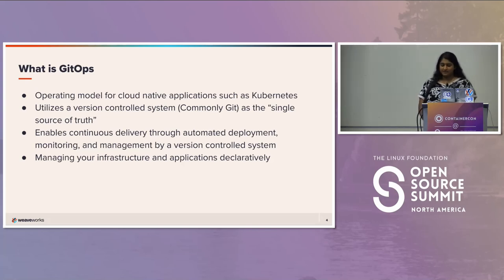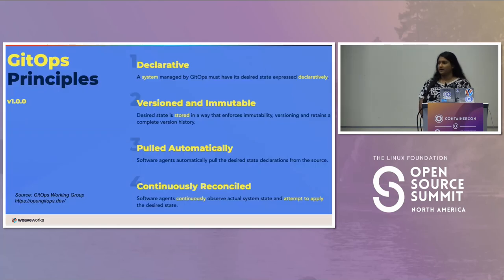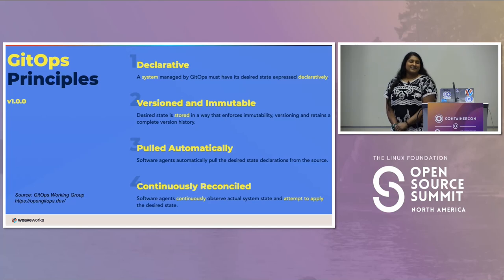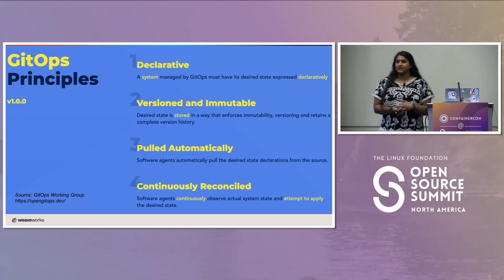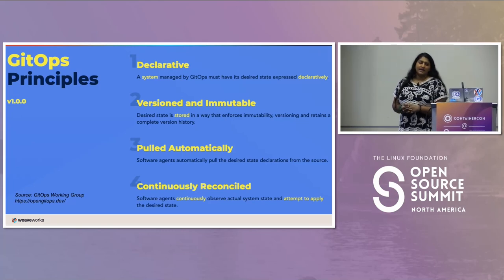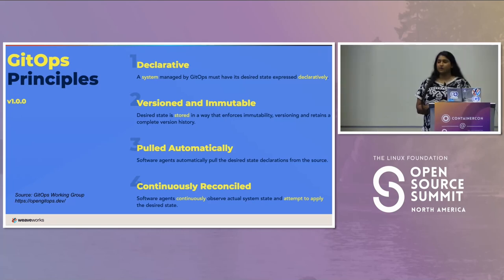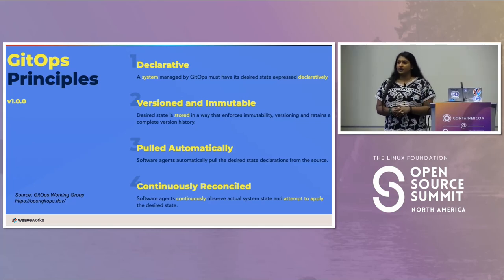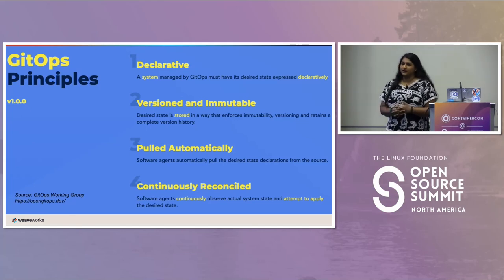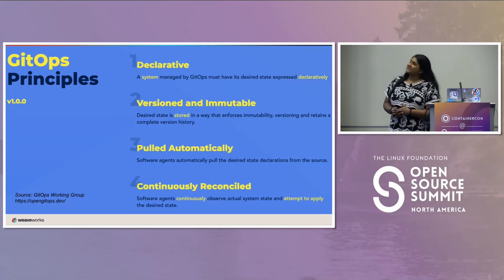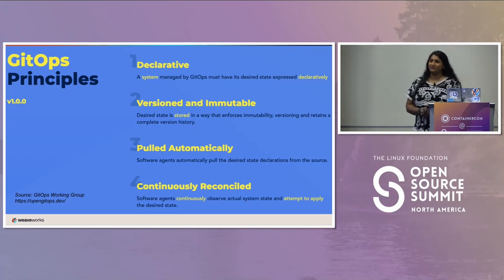The idea is that you manage your applications and infrastructure declaratively. These are the GitOps principles, compiled by the GitOps working group, and you can find them at opengitops.dev. There are meetings you can attend with the GitOps working group — if you go to that website, you can find more about it, attend those monthly meetings, and be more involved with the community.